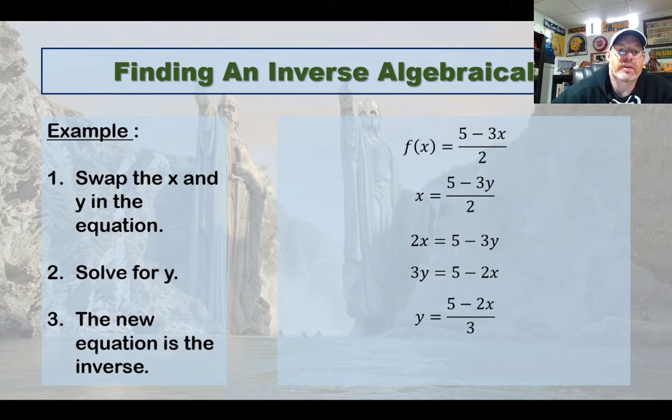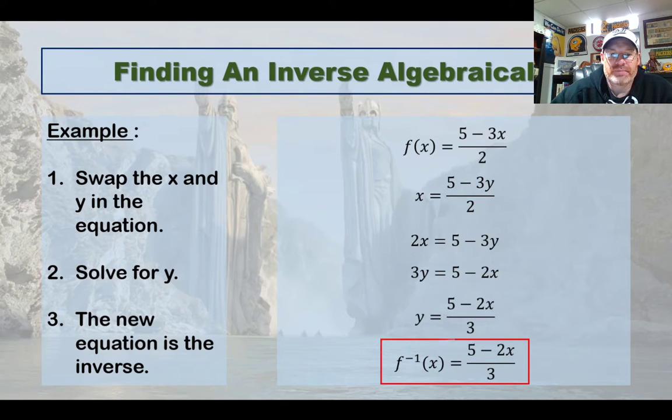If you wanted to, you could think of it as 5 thirds minus 2 thirds x. That is the inverse. Okay, so swap the x and the y. Solve for y. What you have left is your inverse. Let's try another one.